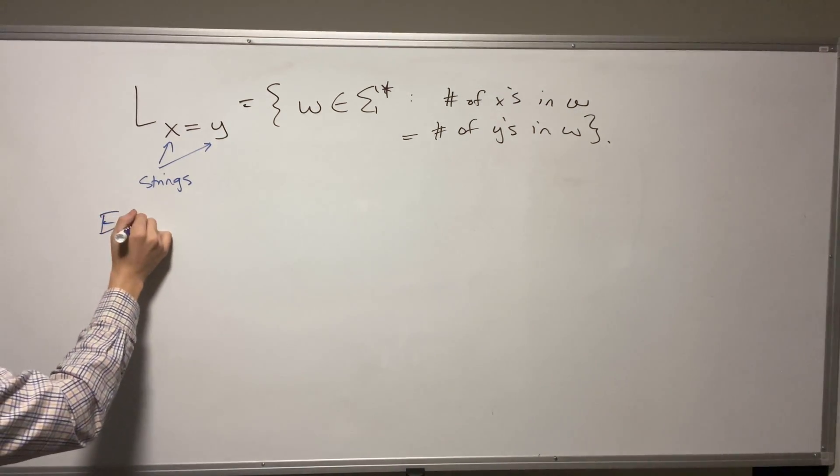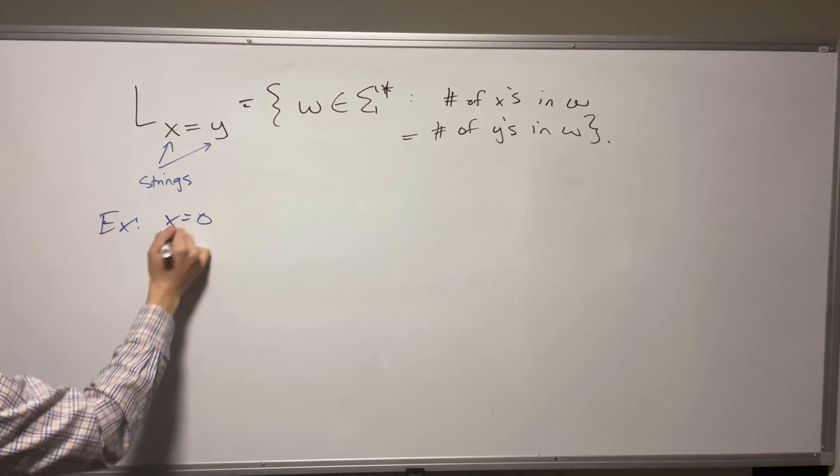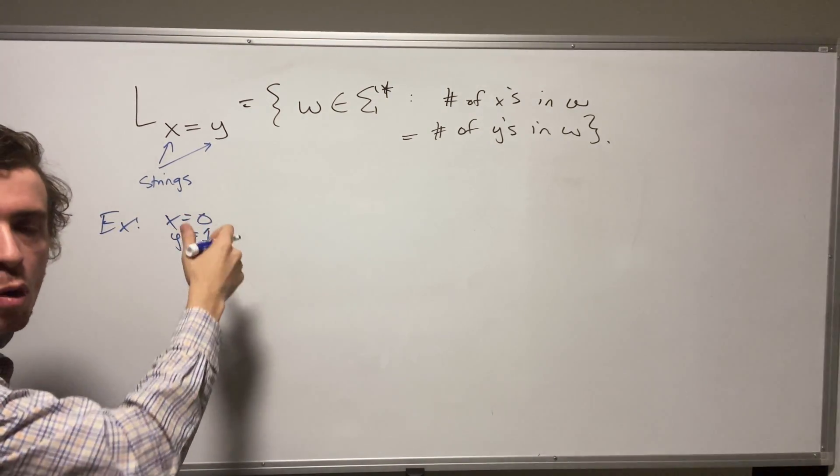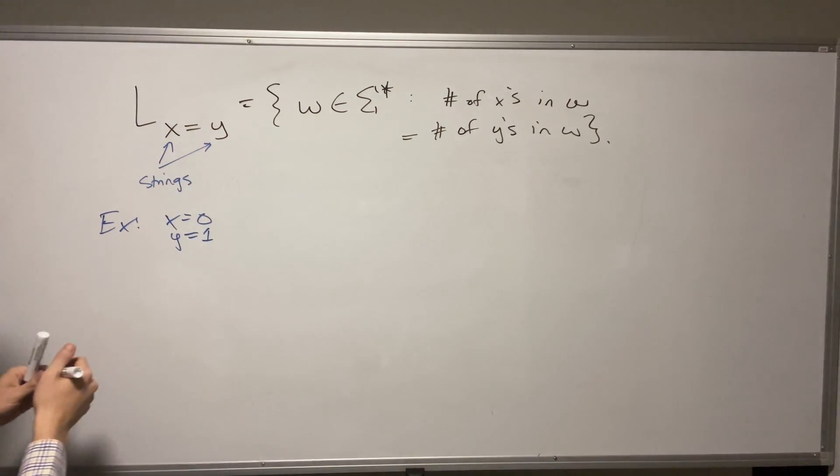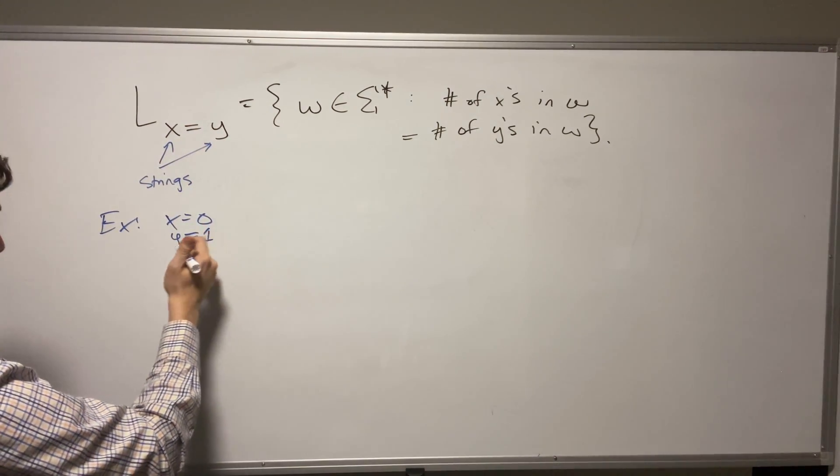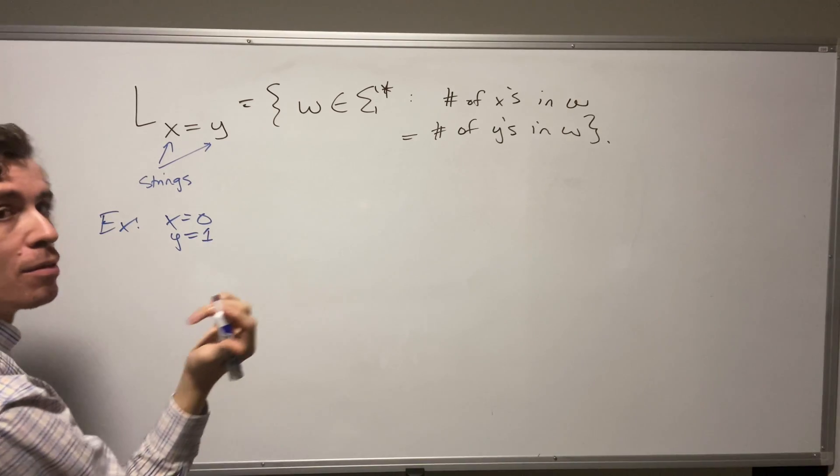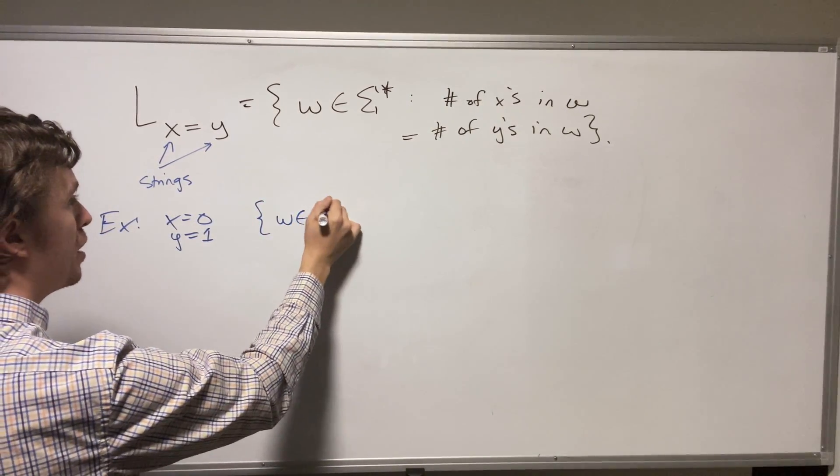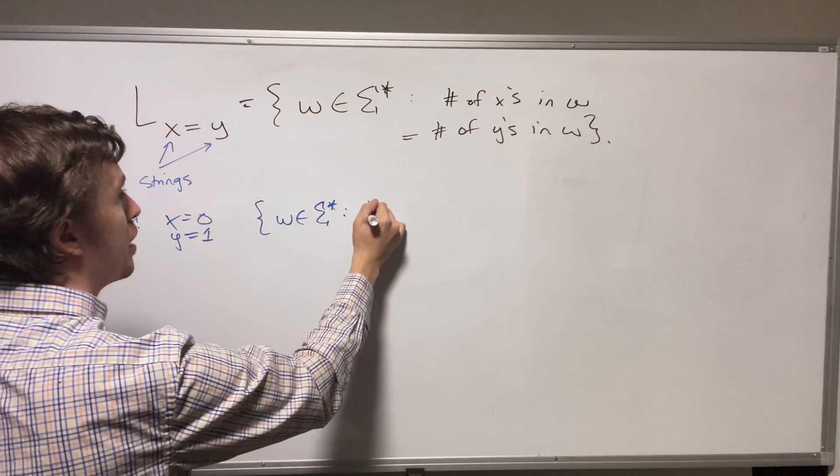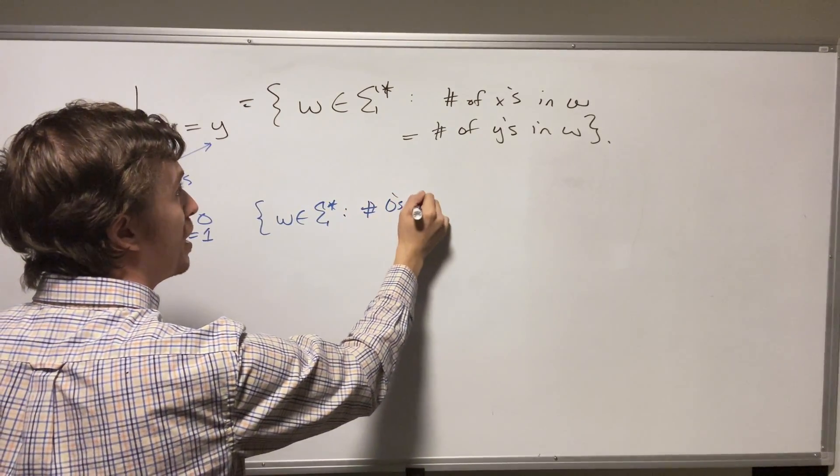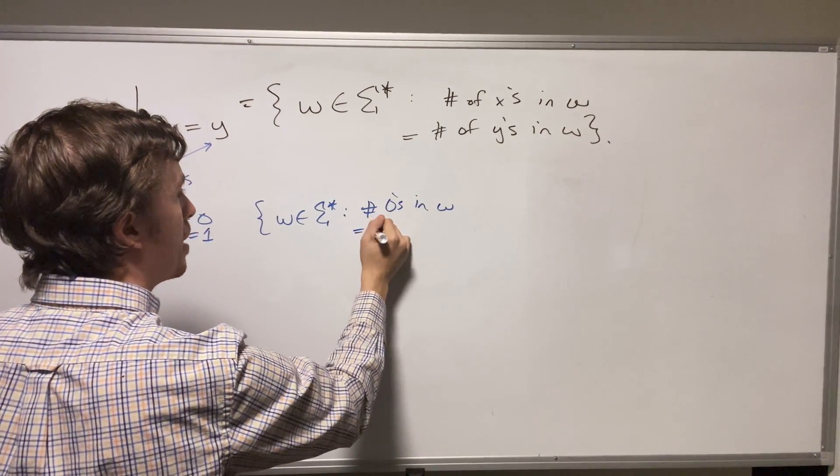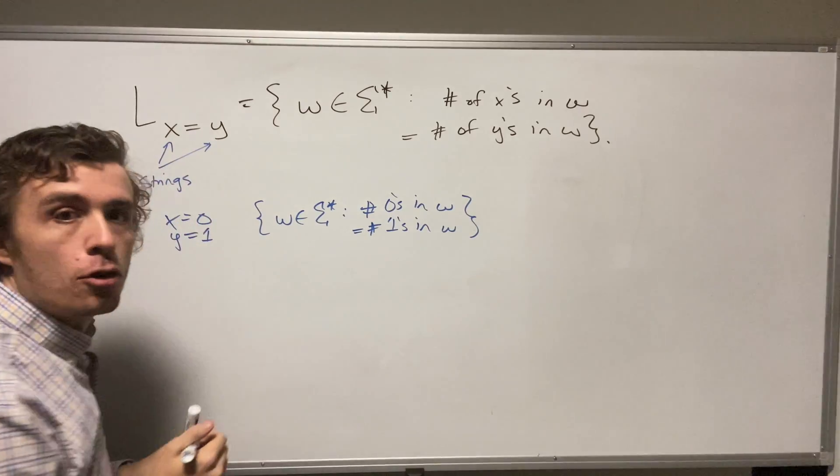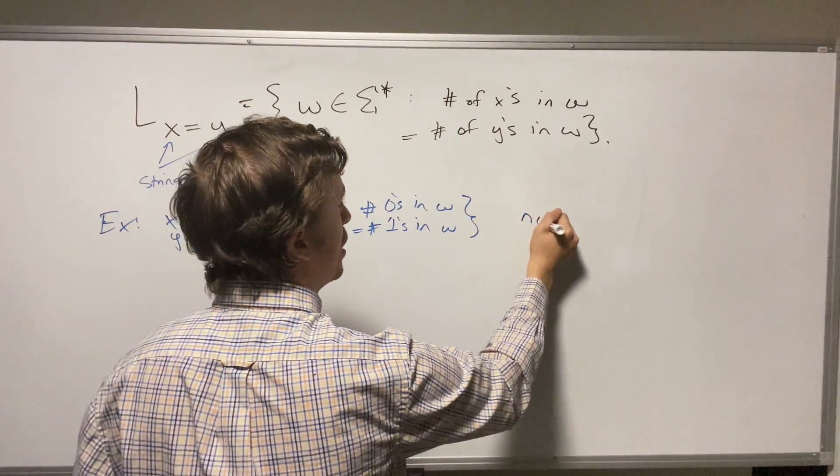So let's just do a few examples here. So a simple example is when X is equal to zero and Y is equal to one. And it's exactly the same, of course, if I swap X and Y, it's totally symmetric here. So here this is saying, depending on the alphabet, that we have the exact same number of zeros and ones. So W in sigma star, such that the number of zeros in W equals the number of ones in W. And of course, that is not regular.